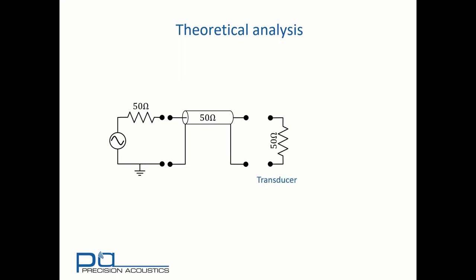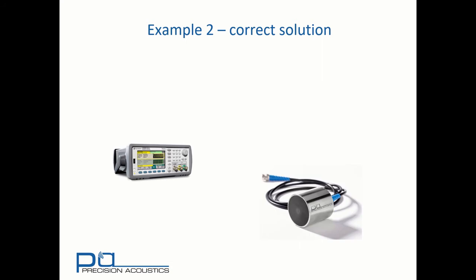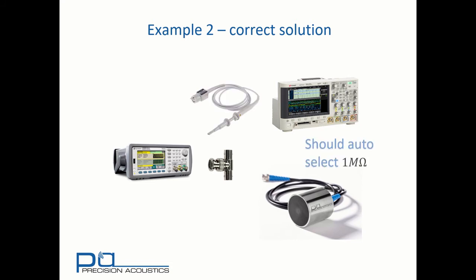The preferred way of solving this problem is to ensure that we use a high impedance on the scope. This way, you have 50 ohms in parallel with one megaohm, which is very nearly 50 ohm impedance. So the correct solution would be to take our function generator, our transducer, our oscilloscope and T-piece all as before, but this time use a scope probe to connect in. These are devices that have very high impedance and are matched to that of the oscilloscope. In fact, most modern scopes should even auto select by recognising from the guard pin on the scope probe that you've actually got a scope probe attached.